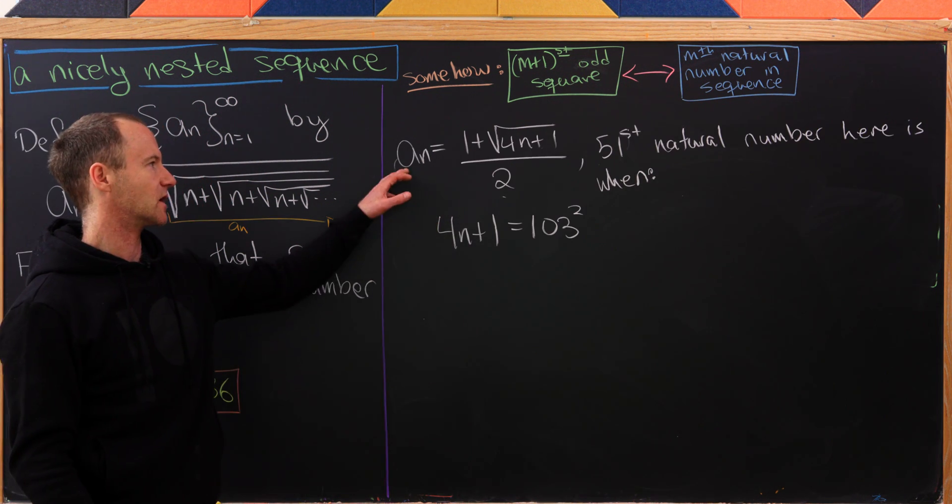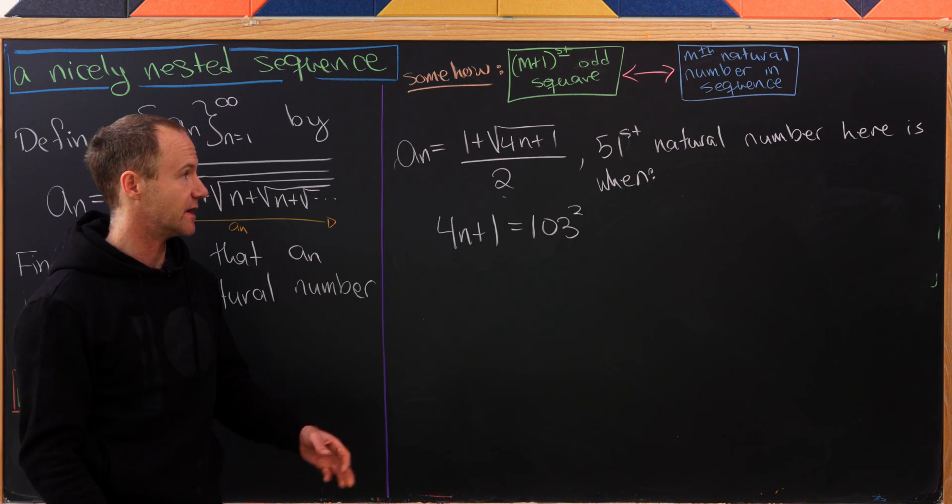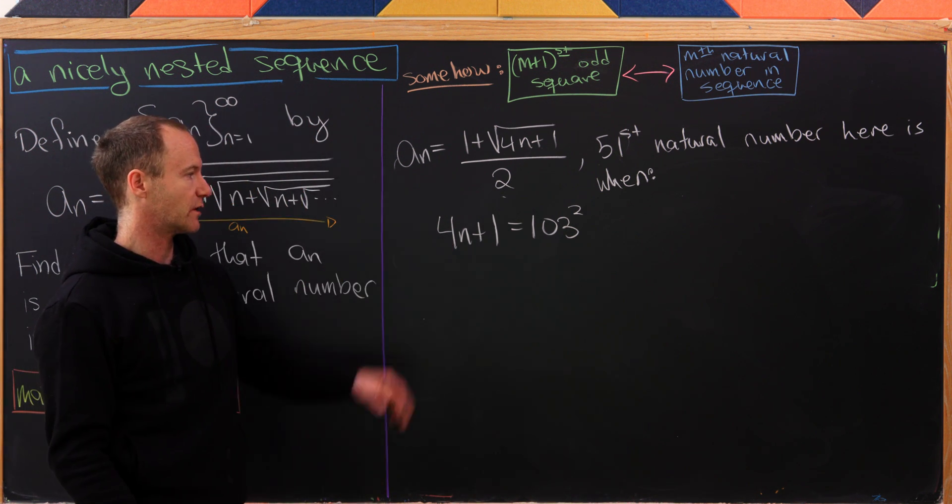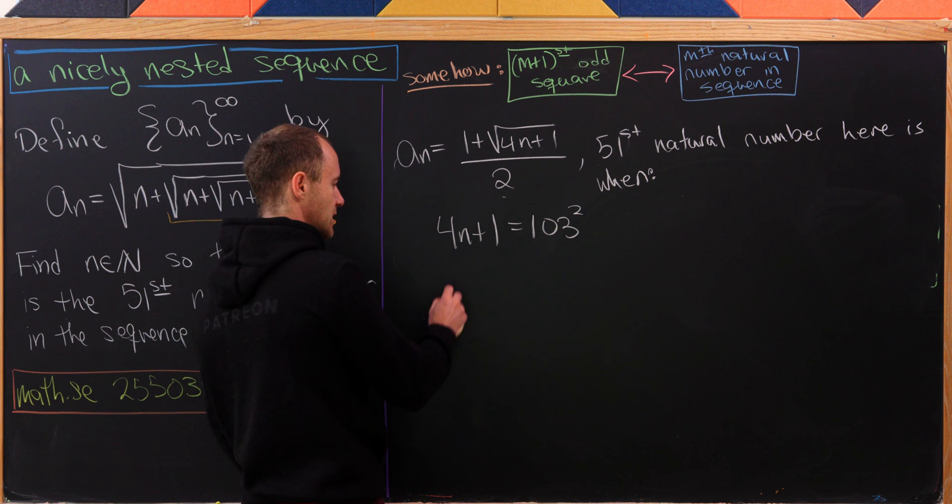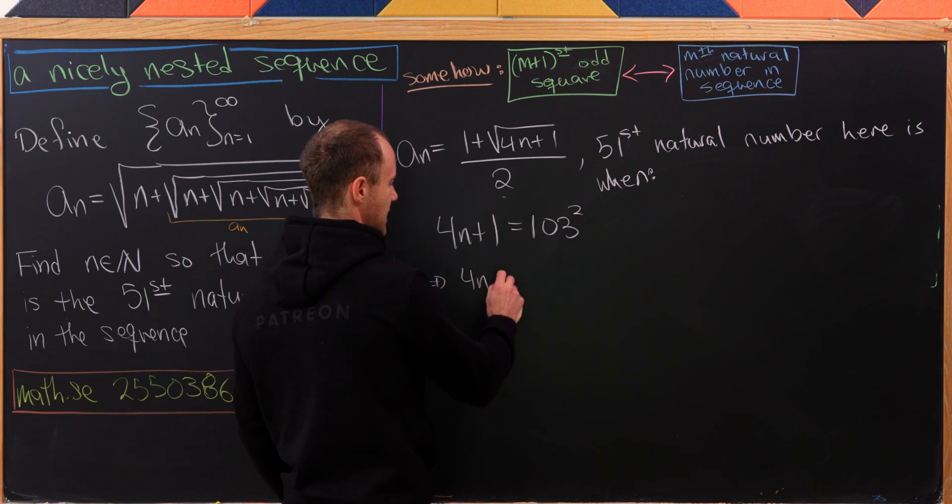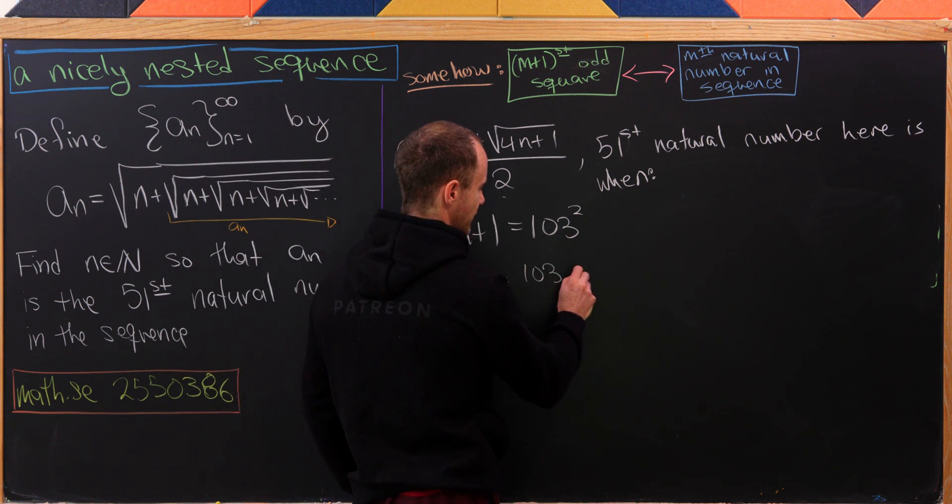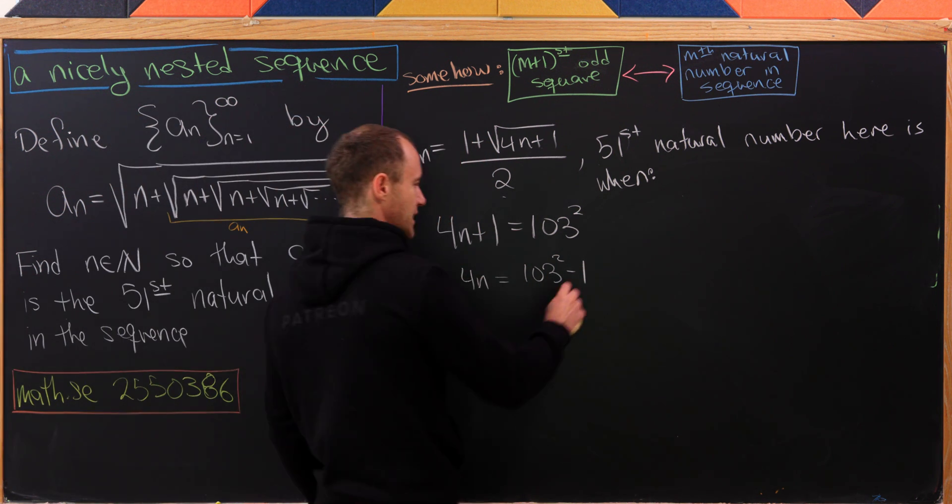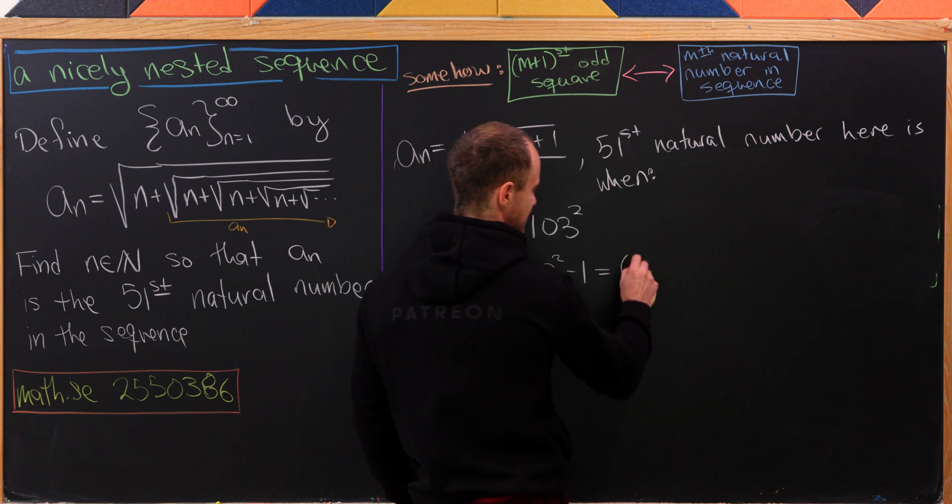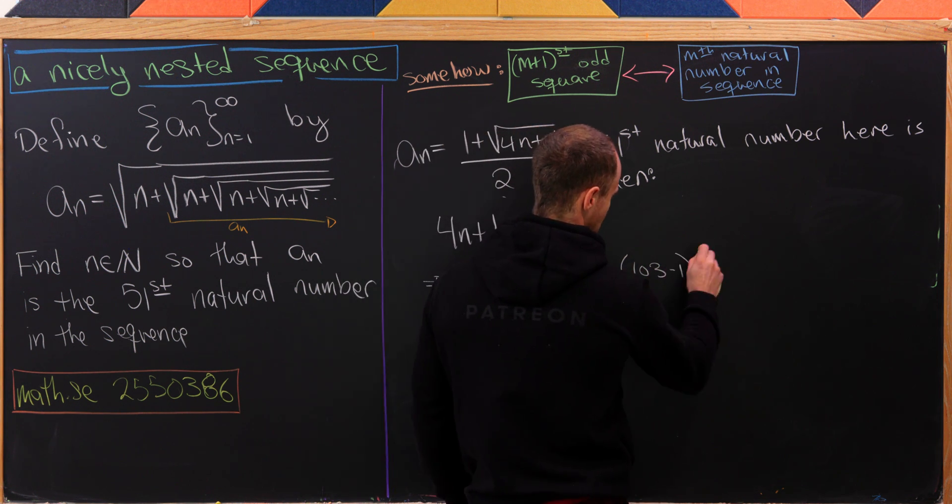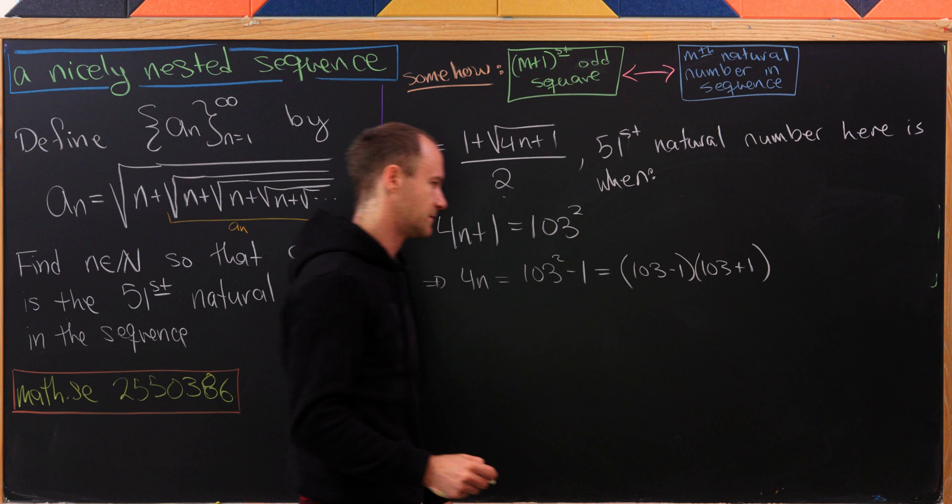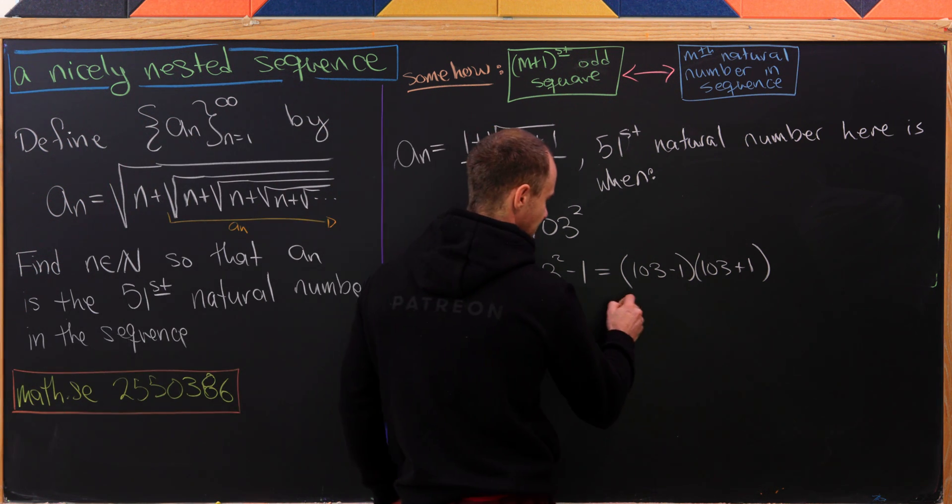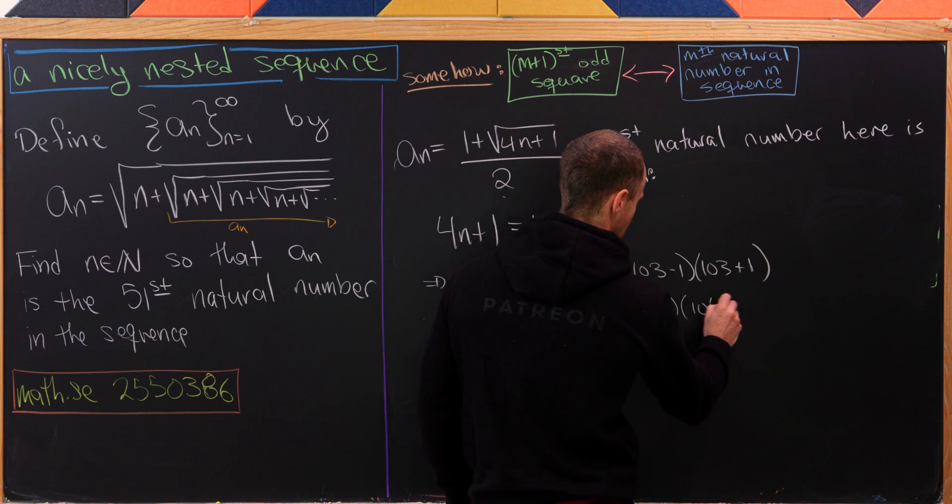Here's a summary of what we had: a closed form for a_n and this statement that the 51st natural number will occur when 4n + 1 equals 103 squared. That means 4n equals 103² - 1. We can factor this as a difference of squares: (103 - 1)(103 + 1), which gives us 102 times 104.